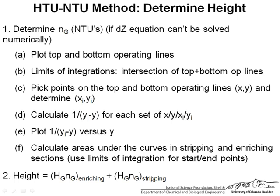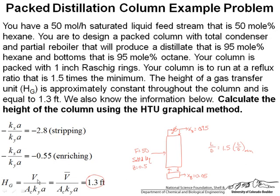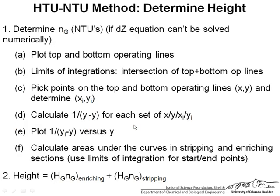So I want to point out something that often Hg and enriching and Hg and stripping are not the same but for us they are the same. V equals V bar and this is because the feed is a saturated liquid and for this type of feed V equals V bar. So our Hg values are going to be the same in the enriching and the stripping sections. Well let's start the problem. Part A, plot the top and bottom operating lines.